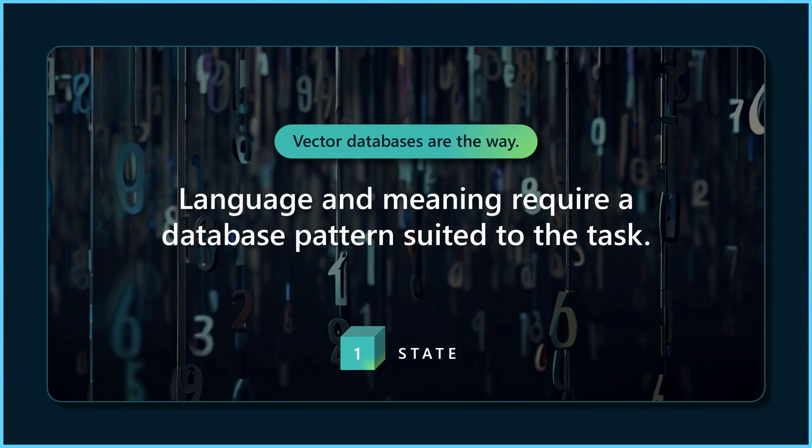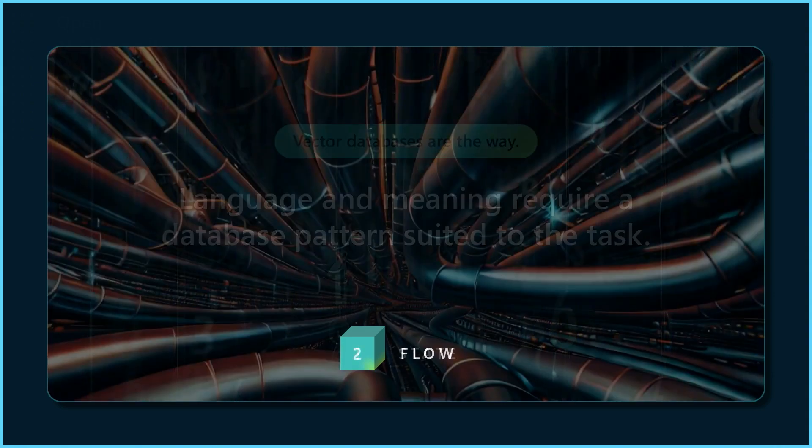Language and meaning need vector databases. It's too difficult to build a schema for the whole world. We moved to NoSQL for the internet because that scaled better and let us build big distributed systems. I think we're now going to start moving to vector databases because that lets us approach meaning better. And we built that into the kernel that we're building.